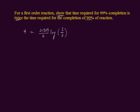The question says: for 99 percent completion of the reaction, we consider the time required is t1. Since the reaction completes 99 percent, the remaining amount to complete will be 100 minus 99, which equals 1. The final amount is 1 and the initial amount is 100. Applying the formula: t1 is equal to 2.303 divided by k, multiplied by log of 100 over 1.